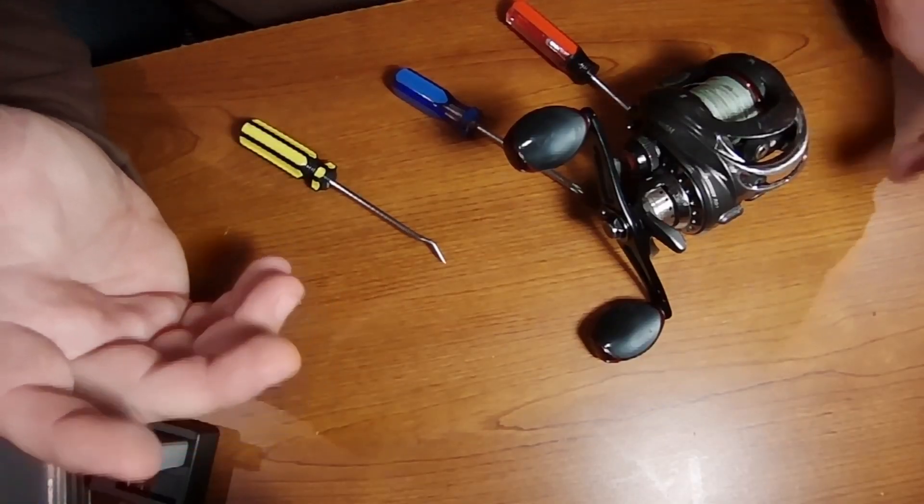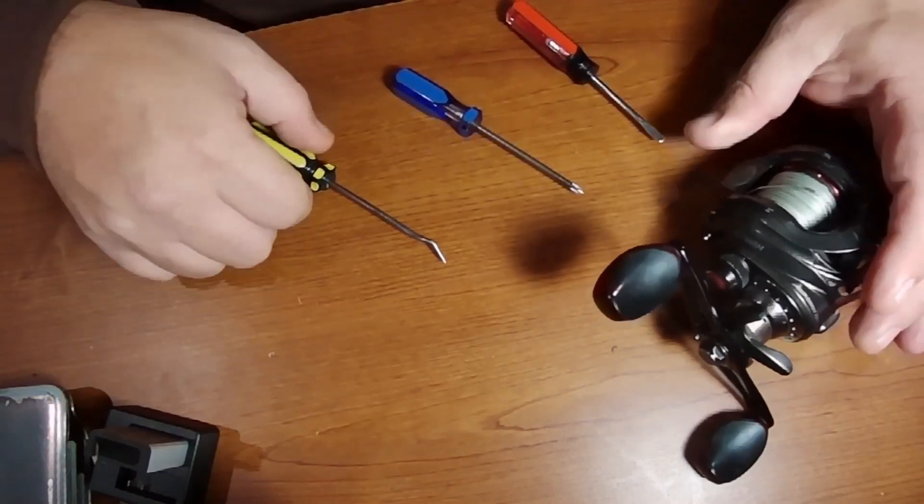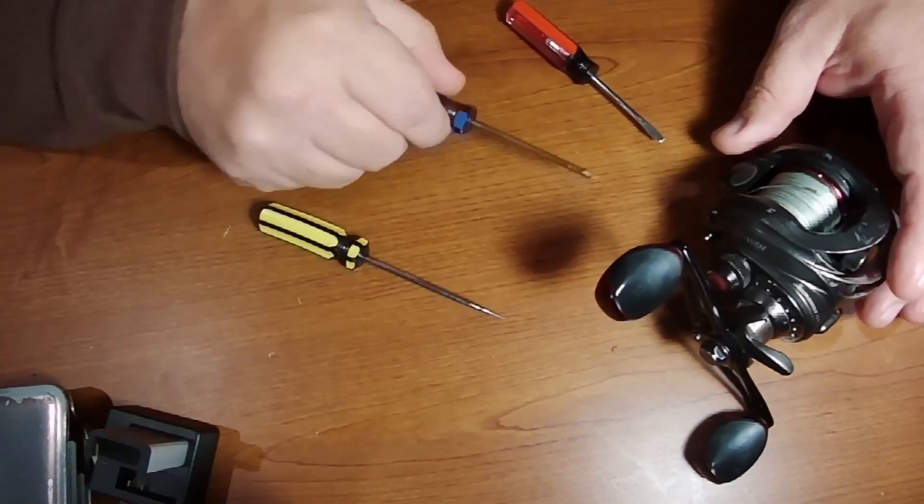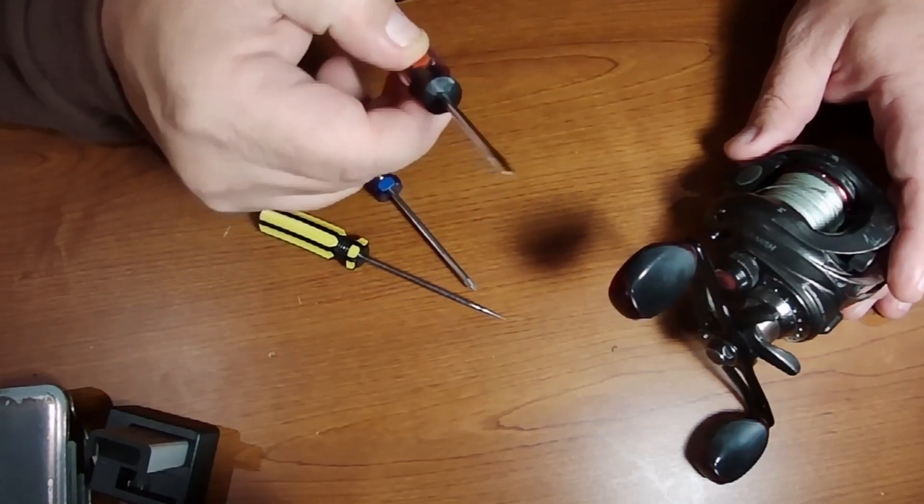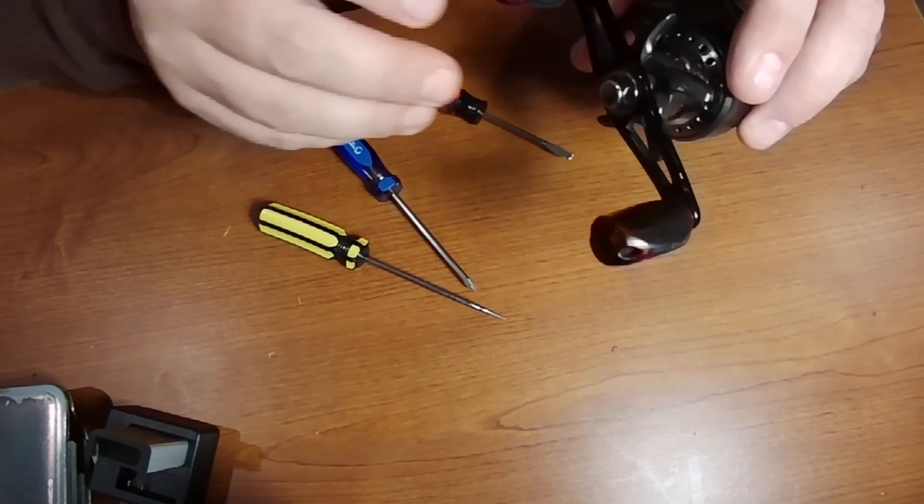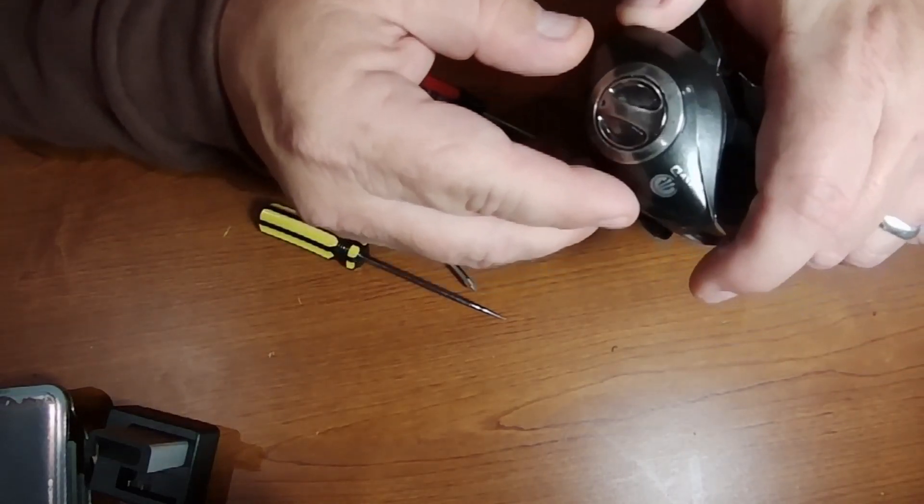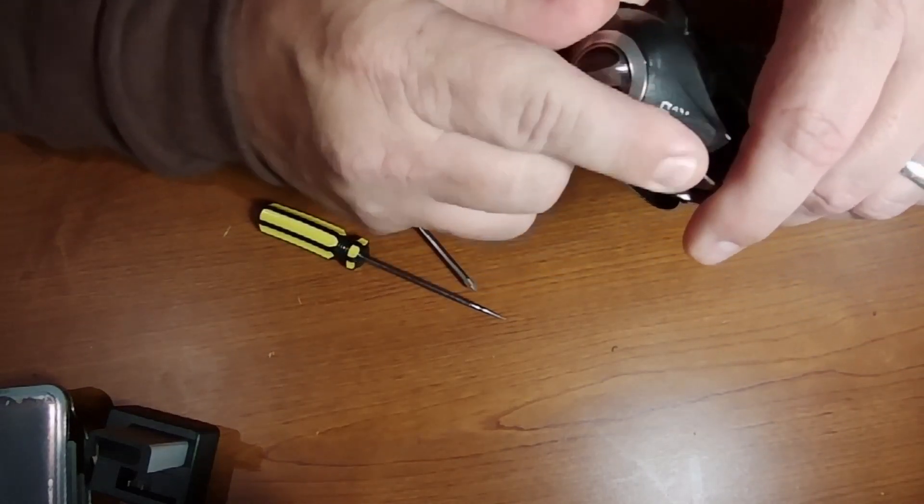All right guys, so you can see here I've got my reel, I've got a pick, a Phillips screwdriver, a small one, and then a flathead. That's about all you're going to need for this. We'll start off, we'll take the side plate off just like I showed you guys last time.